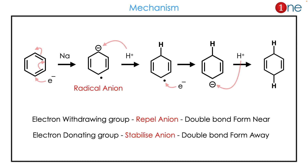The mechanism involves continuous addition of electrons. One electron from sodium is added to the benzene ring, forming a radical anion. Then H⁺ is provided — the anion is quenched but the radical remains. Again, an electron is donated, converting the radical to an anion, and then another H⁺ donation gives the final reduction product. The electron-withdrawing group repels the anion, so the double bond forms near it; the electron-donating group stabilizes the anion, so the double bond forms away from it.